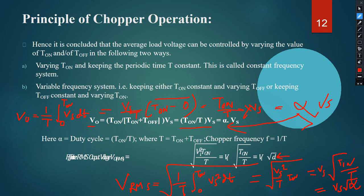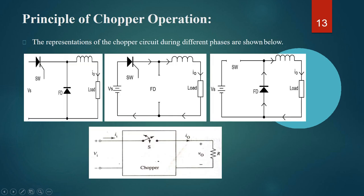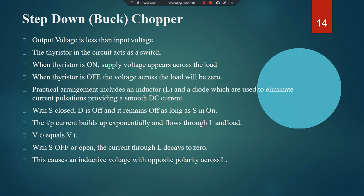These equations apply to a step-down chopper because alpha varies between 0 and 1 (alpha < 1). Since V0 = alpha × Vs, we have V0/Vs = alpha < 1, which means V0 < Vs — confirming this is a step-down chopper.